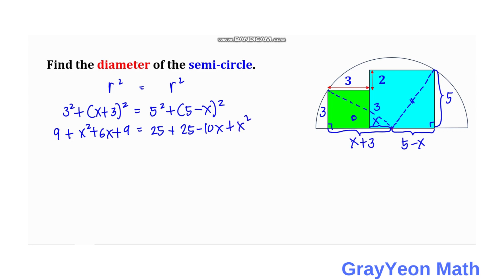So we cancel this x square and we subtract this negative 9. So negative 9 and negative 9. So we have 6x.